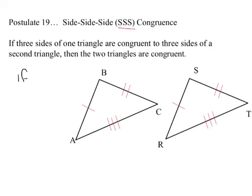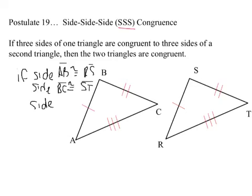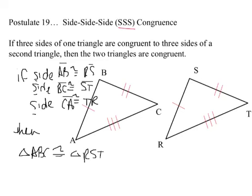If side AB is congruent to RS, and side BC is congruent to ST, and side CA is congruent to TR, see that side, side, side, then we can say that triangle ABC is congruent to triangle RST. So really, side-side-side just says if all three sides are congruent to the other three sides, then the triangles are congruent.